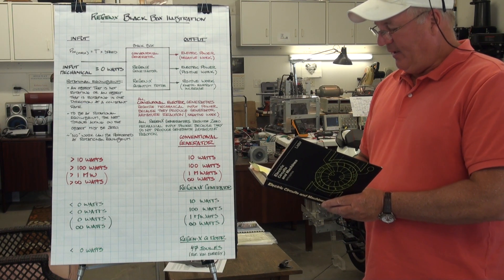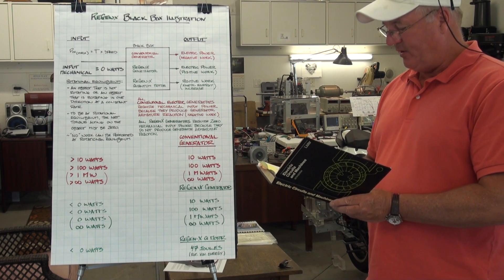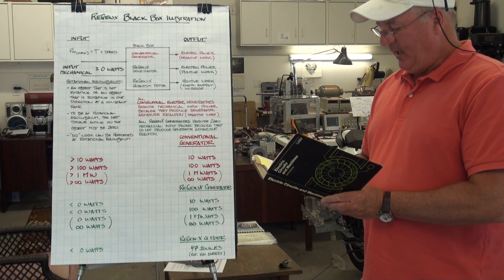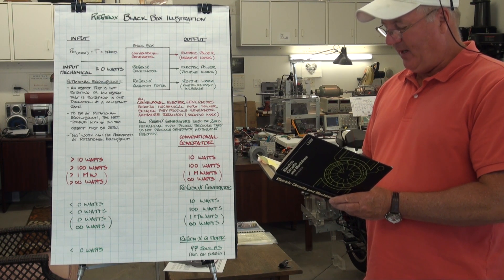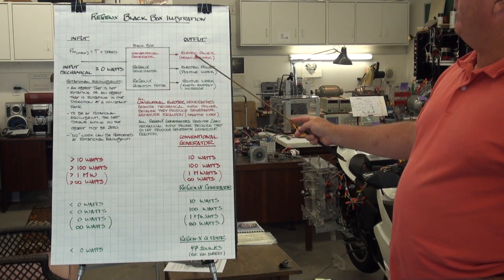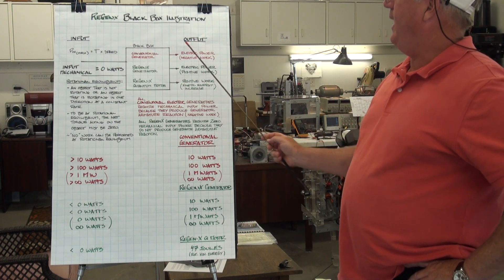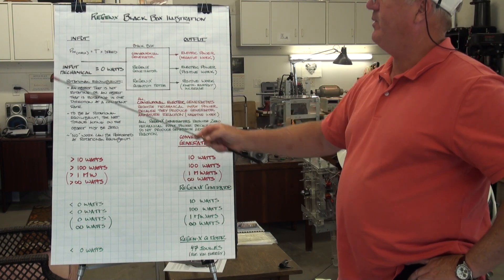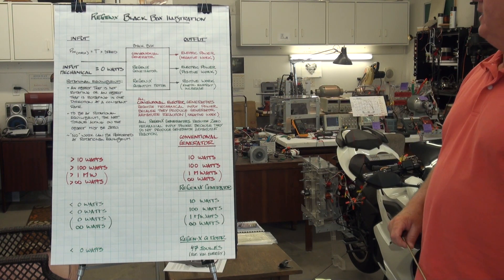The field produces a counter electromagnetic torque that opposes the turning action of the prime mover. Thus, the greater the electric energy supplied to the load, the greater is the reaction, and in turn the greater is the mechanical energy required from the prime mover. Energy must be supplied to the generator at the same rate that it is being taken from the generator. So when the conventional generator is placed on load and generating electric output power, additional mechanical power must be supplied from the prime mover to keep the generator going and maintain its output.